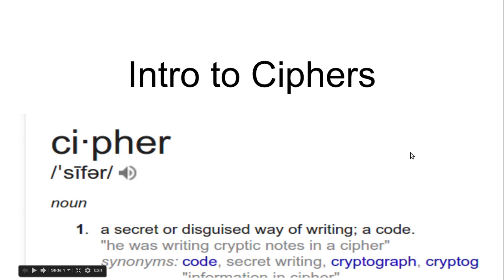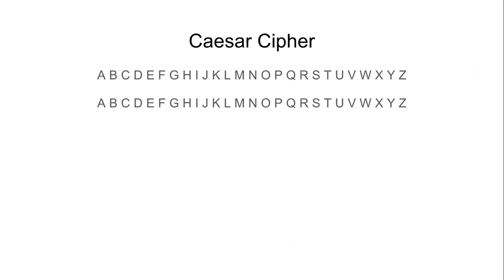Hello everybody, this is Asher Dupre, and today I'm going to be talking about ciphers. A cipher is a secret or disguised way of writing a code — yes, that's the Google definition of cipher.